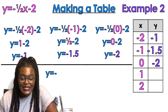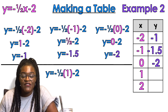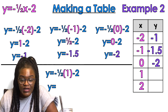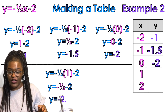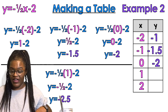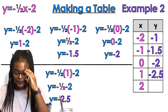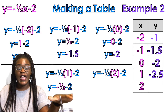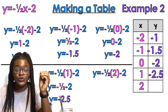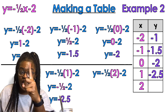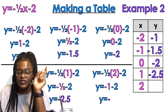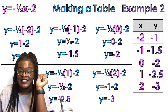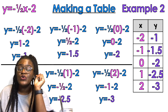So y equals negative one half times one — anything times one is itself — so that's negative a half minus two. Both of those numbers are negative, so negative one half minus two just makes a bigger negative: negative two and a half, or negative 2.5. That goes in the table. Then y equals negative one half times two — half of two is one — a negative times a positive is a negative — so negative one minus two gives me negative three. That's my last number.